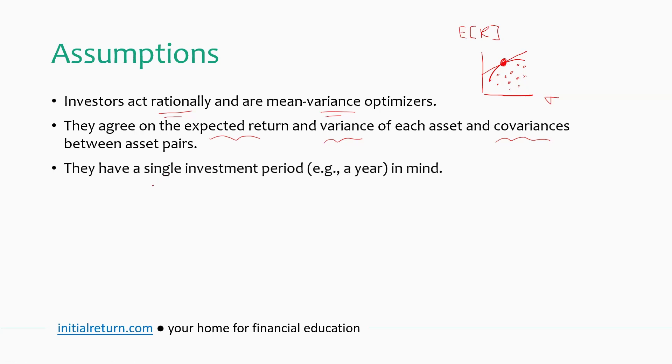The next assumption is that according to the model, all investors have a single investment period, for example, a year, but could be five years, ten years. Doesn't matter as long as it's the same for everyone. Again, this is of course not true in reality, but a simplifying assumption for the model.